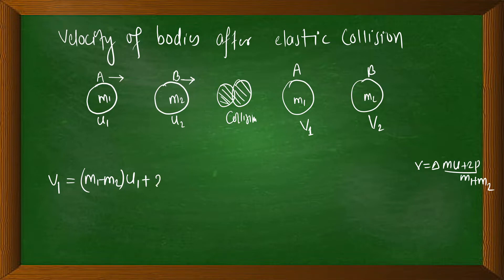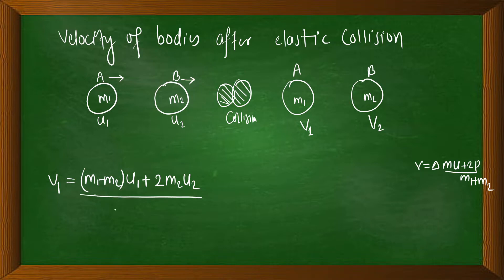Two times the momentum — M2 divided by total mass M1 plus M2. This gives the expression for V1 using the initial momentum terms.